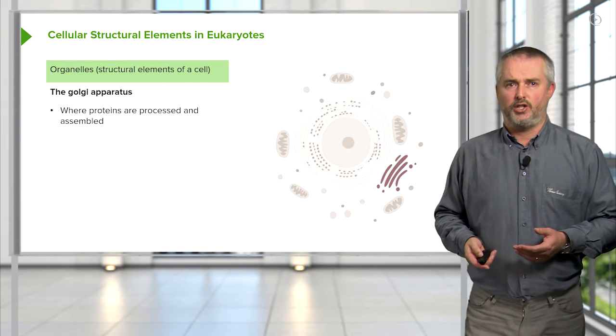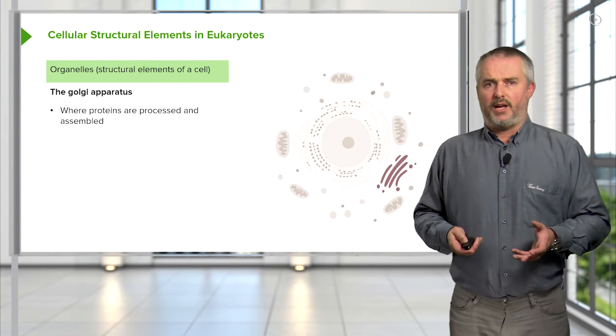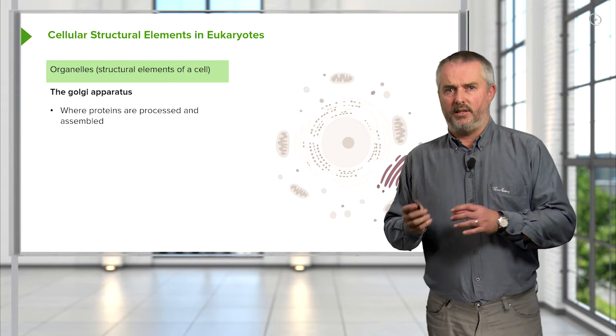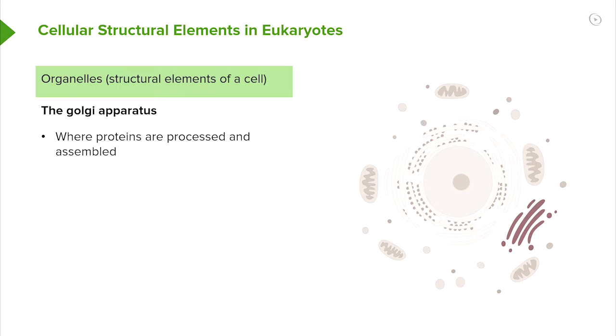The Golgi apparatus is the last stage in the protein manufacturing process within the cell. The polypeptide chains have a ride there from the ribosomes through the rough ER.